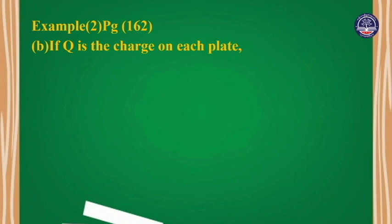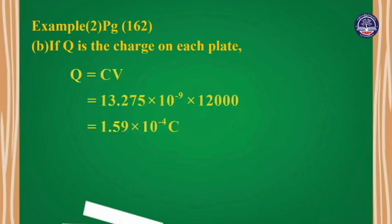Q equals C times V, equals 13.275 times 10 to the power minus 9 times 2,000, equals 1.59 times 10 to the power minus 4 coulombs.